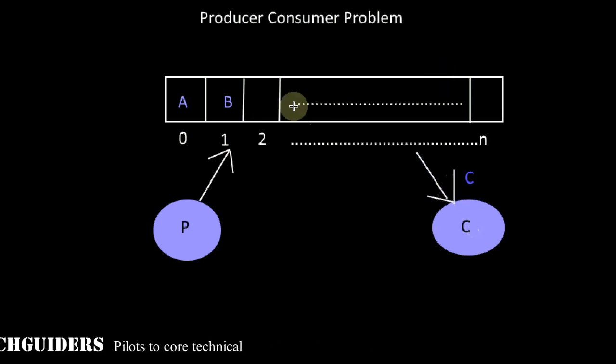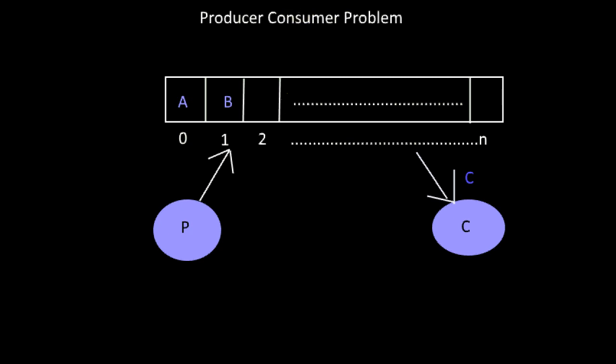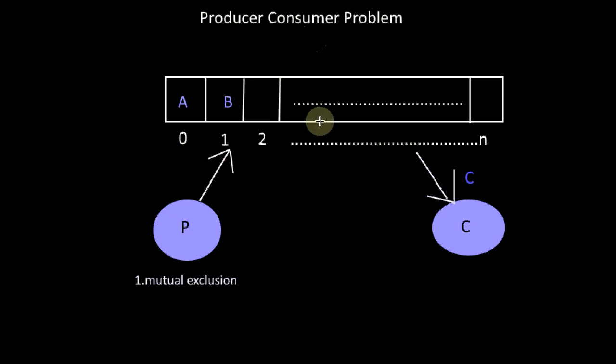The synchronization problems associated with this are as follows. First, there should be mutual exclusion. The buffer pool is shared by both the producer and the consumer, so while one process is accessing the buffer, the other process should not access it. Only one process should be allowed to enter the critical section at a time.